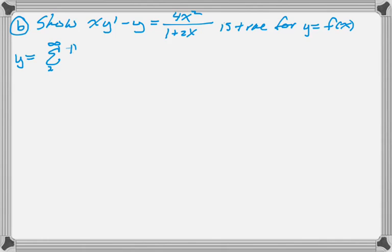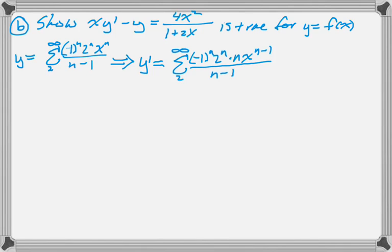Alright, the next part is going to be a lot of symbol manipulation. So we want to show that this is true for the given function, y equals f of x, where that's the series we've been working with. So y is actually equal to this. And you can see it's really hard for me to write n equals all the time at the bottom of this summation, so I'm just going to write the little 2 there. So I'm going to take the derivative of this, and it becomes a sum from 2 to infinity of negative 1 to the n, 2 to the n, and then by the power rule, nx to the n minus 1, and then all over n minus 1. It still starts at 2 because the first term of the original thing was not a constant.